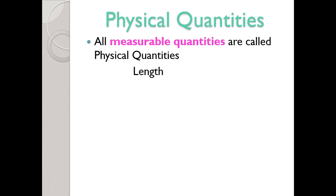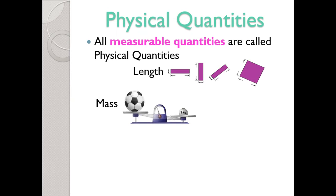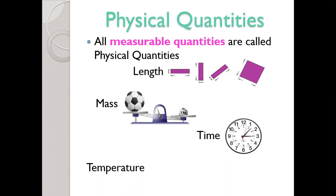The first example is length. We can measure length using a centimeter scale or meter scale, that's why length is a physical quantity. Next, mass is also a physical quantity — we can measure mass. Another example is time, which is also a physical quantity. The last example here is temperature, which is also a physical quantity.